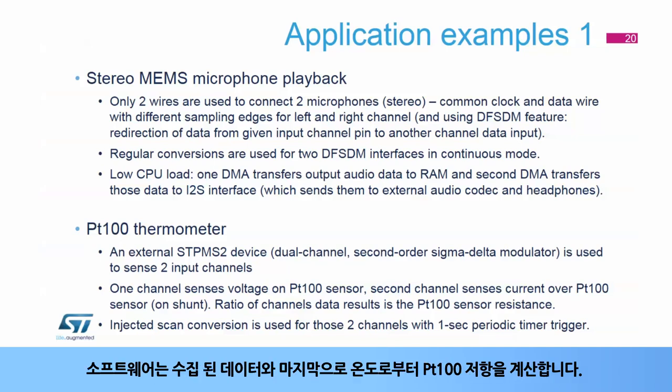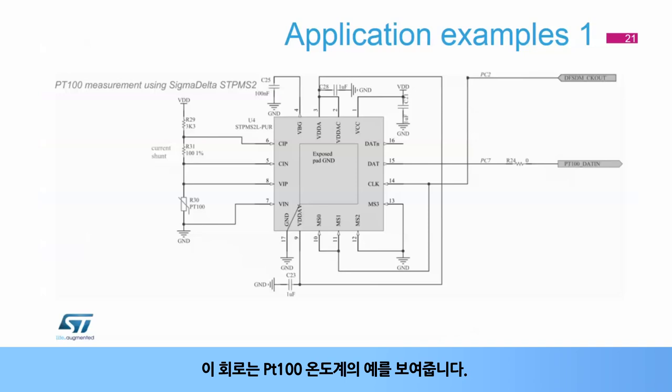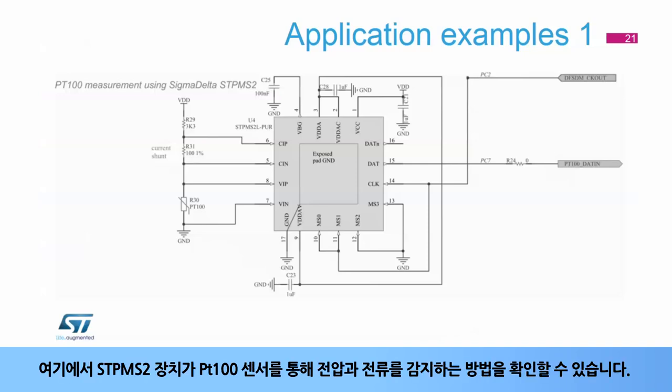The second example is a PT-100 thermometer, which uses an external STP-MS2 Sigma-Delta modulator monitoring two channels. One channel senses the voltage and the second senses the current on the PT-100 sensor. Both channels are sampled using timer-triggered injected conversions in scan mode, and software then computes the PT-100 resistance from collected data and finally the temperature.